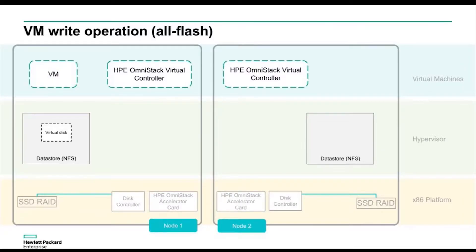What features does the SimpliVity platform have to assure the protection of data? It all starts with the ProLiant DL380 and all the availability features it brings: redundant power supplies, redundant fans, the ability to detect memory errors and correct for those — all the features you expect in an enterprise-class server platform.